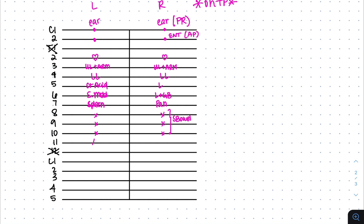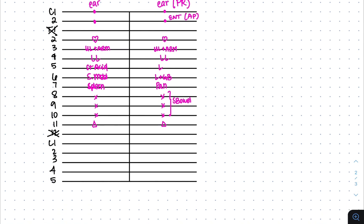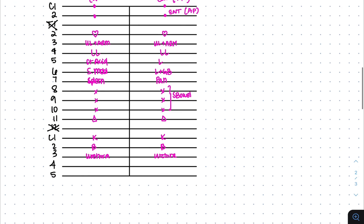Below the small bowel, you'll have your adrenals. T12 skips, remember. So L1 below your adrenals, you'll have your kidneys, then your bladder, then your urethra. Skipping to the bottom, you'll have your uterus here. The large bowel is from L2 to L4 on the transverse process.